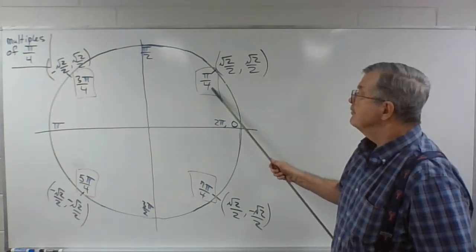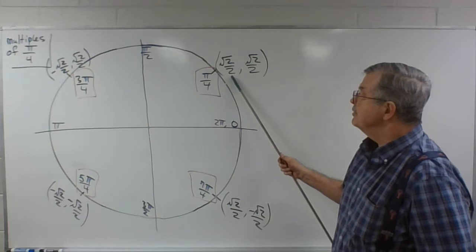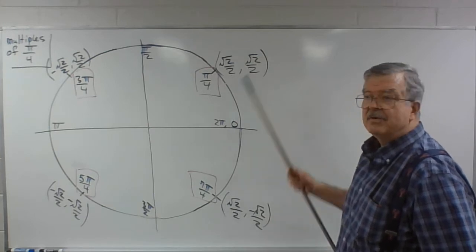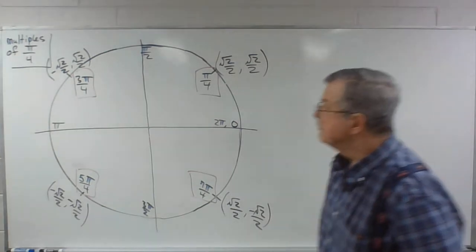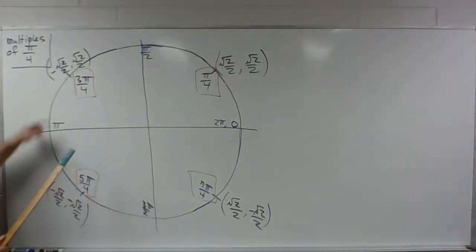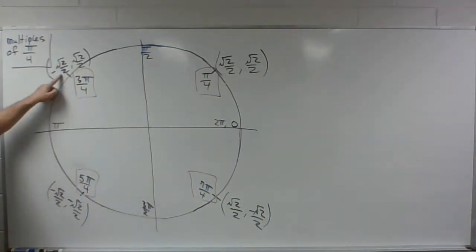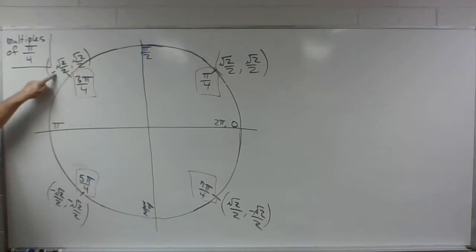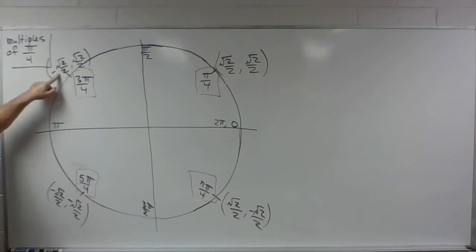Pi over 4: cosine is square root of 2 over 2, sine is square root of 2 over 2. For 3 pi over 4, cosine is square root of 2 over 2 and the sine is square root of 2 over 2. And as we're in the second quadrant, we make the x-coordinate, the cosine, negative.